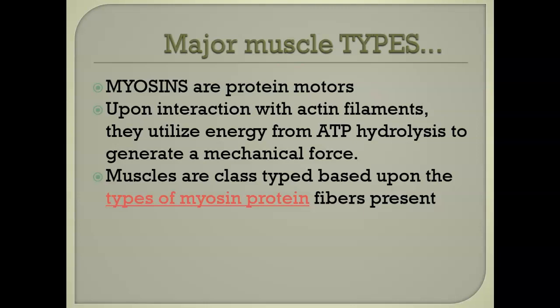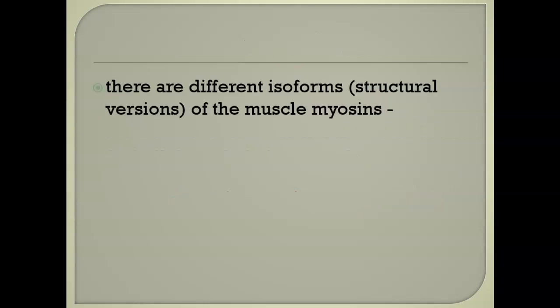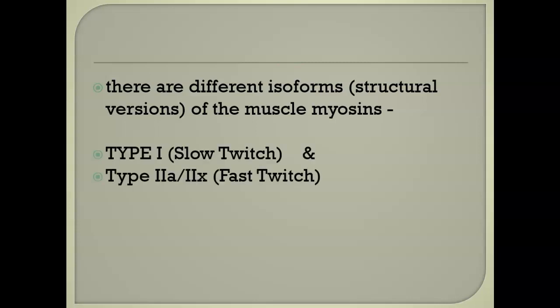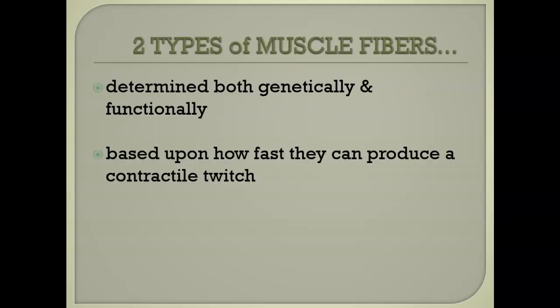Any skeletal muscle in the body is composed of myosin motors, and there are two types. They are different isoforms — built differently. There is a type 1, known as slow twitch, and a type 2, known as fast twitch. The type 2s are further broken down into type 2A and 2X. Think of the 2A as a modern type 2 and the 2X as an older type 2.